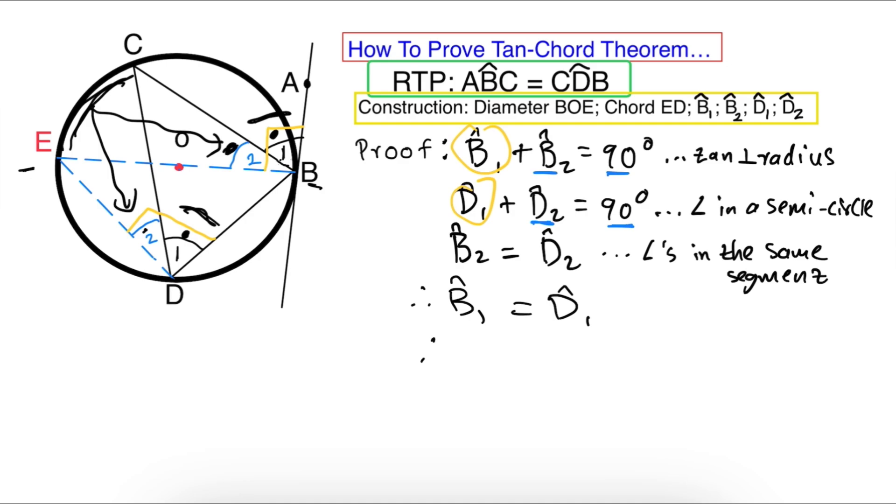The last step, just to cherry on top, to show the examiner that you're gonna present it the way they want it. I'm gonna rewrite the RTP. I'm just gonna say therefore angle ABC equals angle CDB, then you are done.